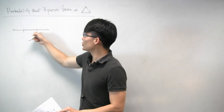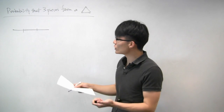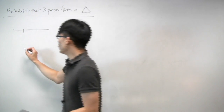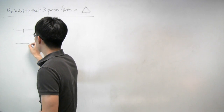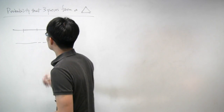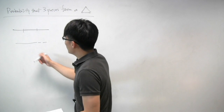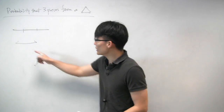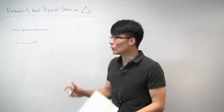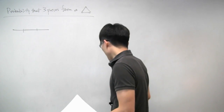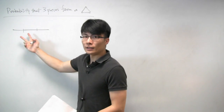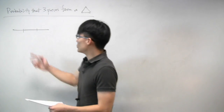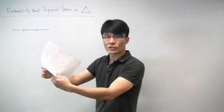We want to know: what's the probability that when you take these three pieces, you can form a triangle? The condition that must be satisfied is that when you take any two of the three pieces, their combined length has to be greater than the length of the remaining third piece. That has to be true for any two pieces.